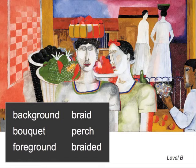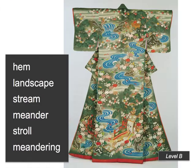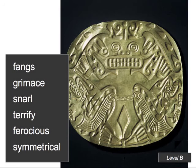Students learn the words 'background' and 'foreground' while discussing a painting by a Mexican artist. Students learn the words 'meandering' and 'landscape' as they discuss a Japanese kimono. This chest plaque from ancient Panama is great for using the words fangs, grimace, snarl, terrify, ferocious, and symmetrical.